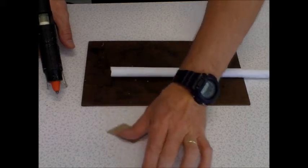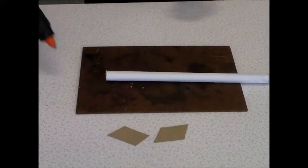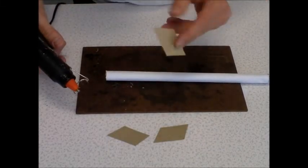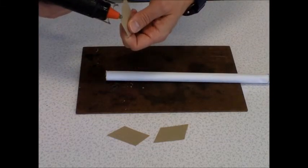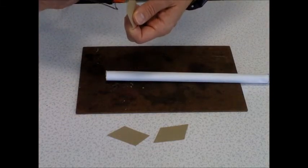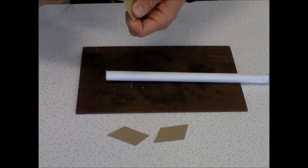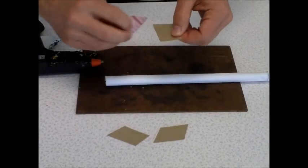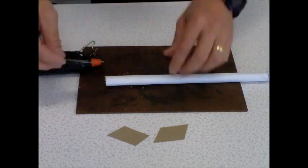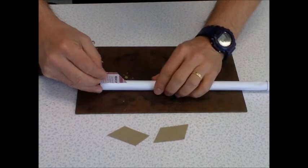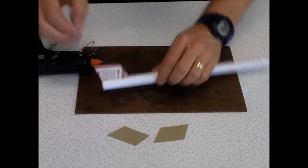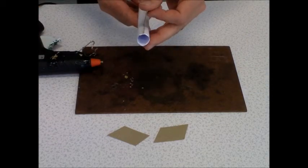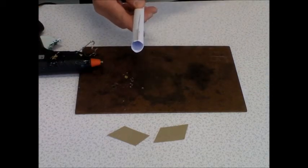Now to attach the fins you use a hot glue gun. Make sure you're working on your bench protection mat. You take your bit of cardboard and put glue along one edge. Glue your first fin, okay, perpendicular to the surface of your tube.